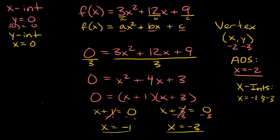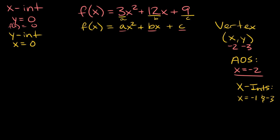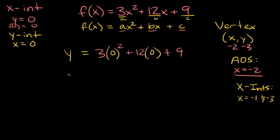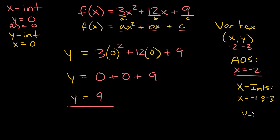Lastly, let's find the y-intercept — this one is much easier. To find the y-intercept, we set x equal to 0 and plug 0 in for all x terms. So y equals 3 times 0 squared plus 12 times 0 plus 9. Zero squared is 0, times 3 is 0; 12 times 0 is 0; so y is simply equal to 9. Our y-intercept is at y equals 9.